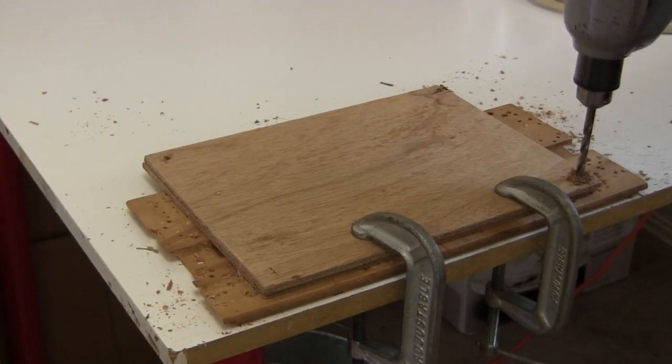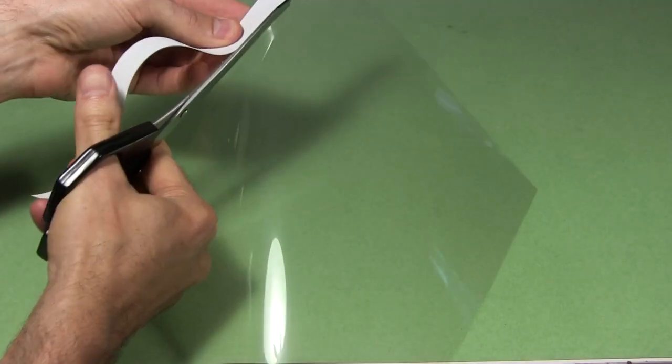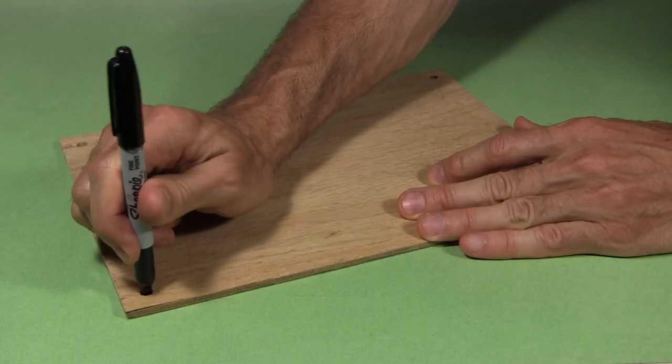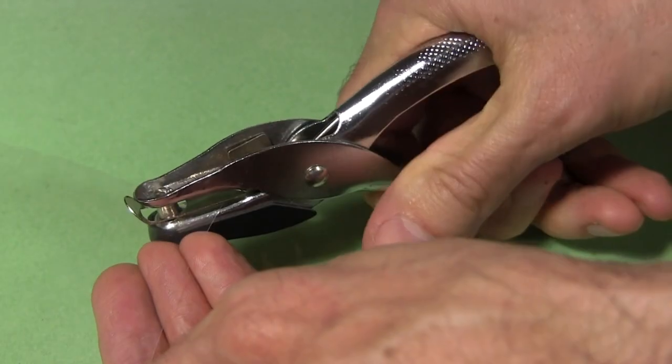So I drill matching quarter inch holes in the corners of the two pieces of wood. My transparencies have white strips on one side, so I cut them off. I lay a piece of wood on top and mark the holes. Then I use a hole punch to make the holes.